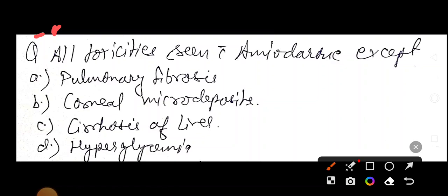C, they are asking except. Amiodarone causes pulmonary fibrosis, true statement. So this is ruled out. Corneal micro-deposits, we find with amiodarone. So this option is also ruled out. Cirrhosis of liver, definitely we find with amiodarone. Amiodarone kidney involvement is not with amiodarone. Hypo-hyperthyroidism causes amiodarone, but not hyperglycemia.